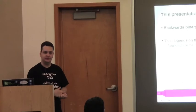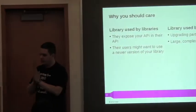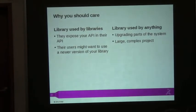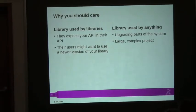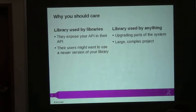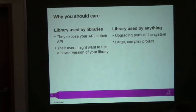Why should you care about binary compatibility? One reason: library used by other libraries. If you're making a library and it is used by people making other libraries, they might expose your API and types in their own API. If you break binary compatibility, they necessarily break binary compatibility as well when they upgrade, or worse, everything just breaks. If you're making a library intended to be used by other libraries, you should pay attention to this — and you're one step removed from whoever is doing the upgrade.